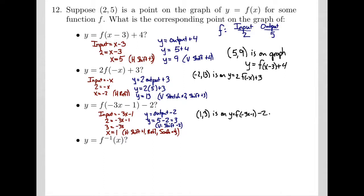The fourth example is the inverse function, where inputs and outputs are reversed. The input of f was 2 — that's the output of the inverse. The output of f was 5 — that becomes the input of the inverse function. So the point on the inverse function is where x and y switch places: (5, 2) is a point on the graph y equals the inverse function of x.